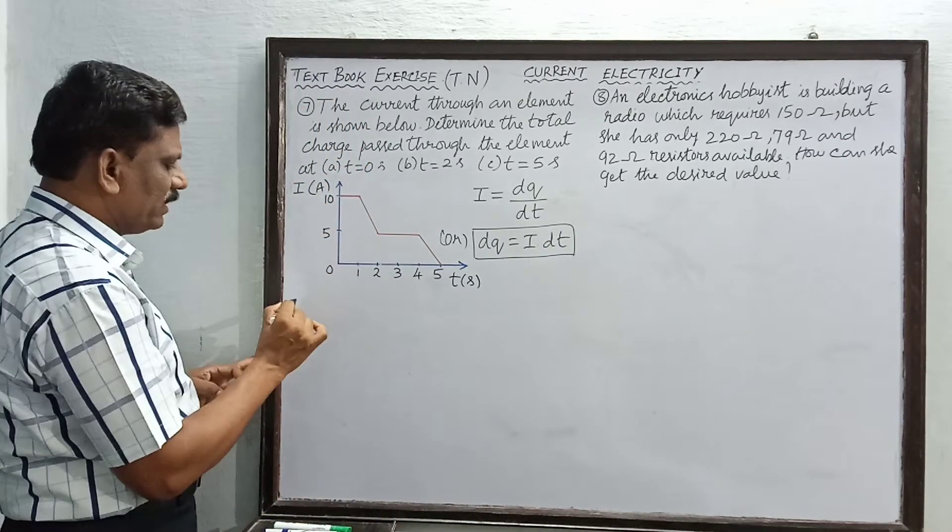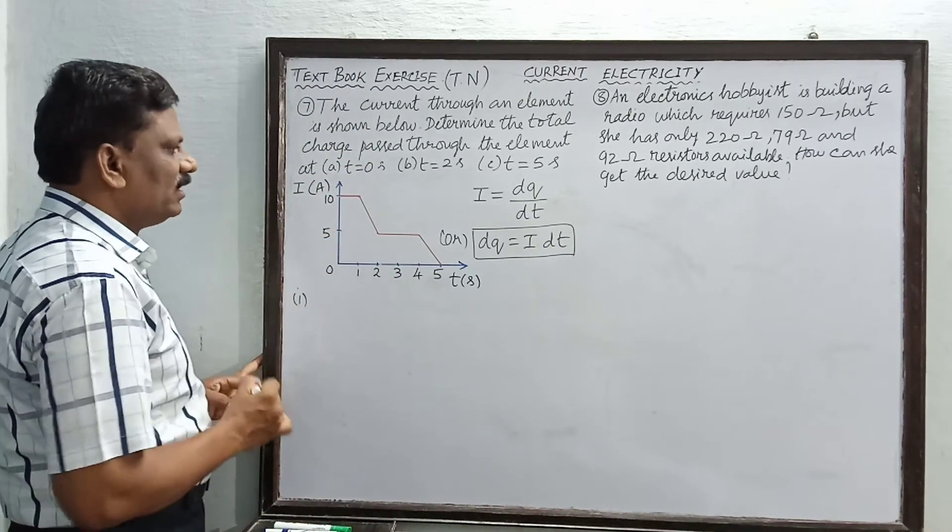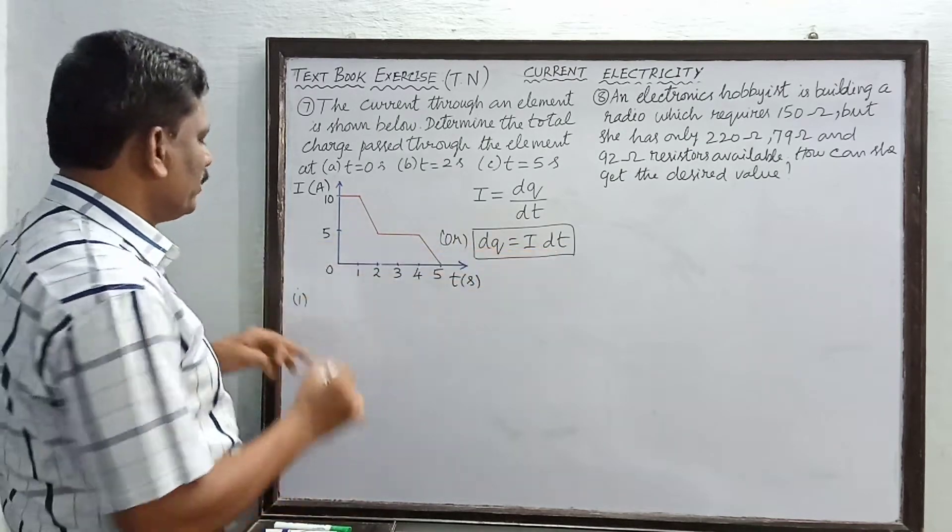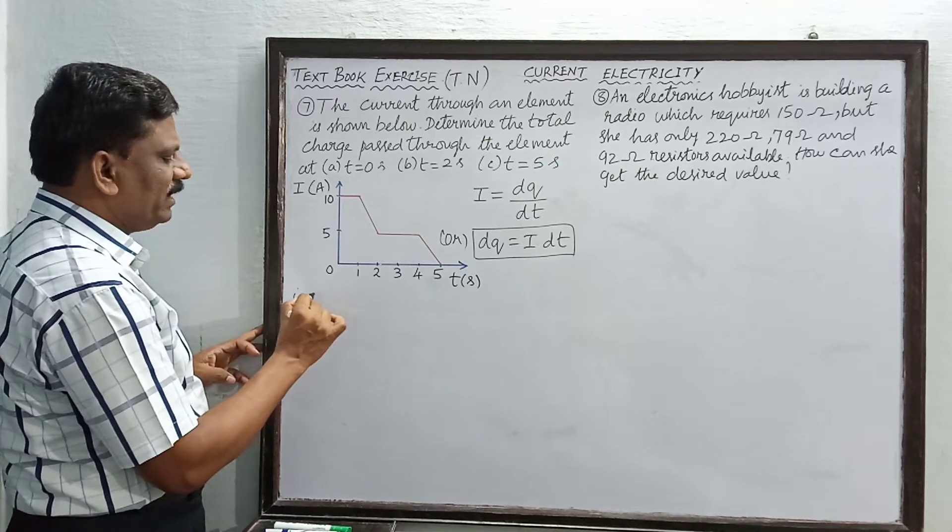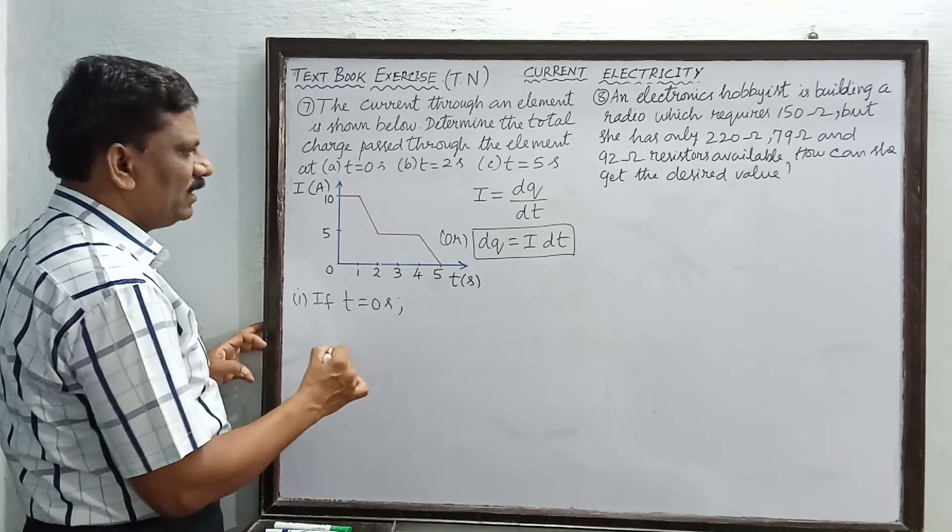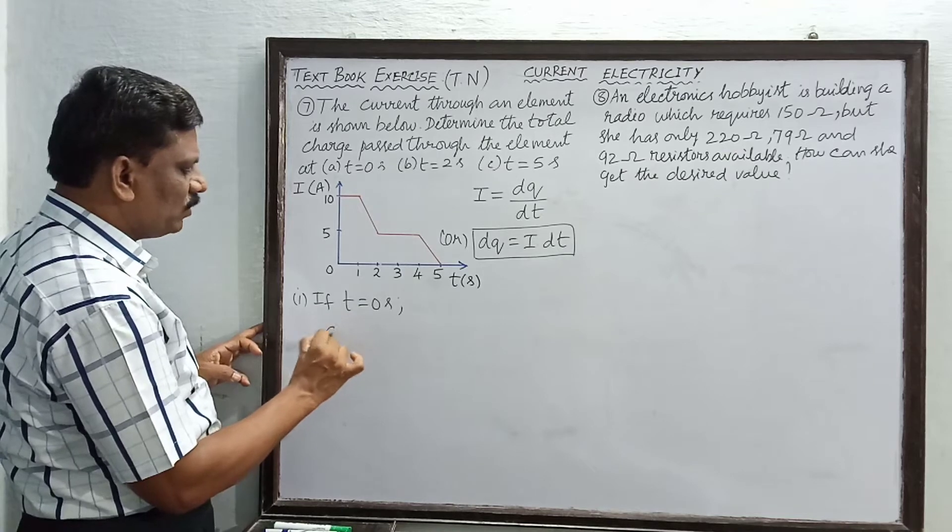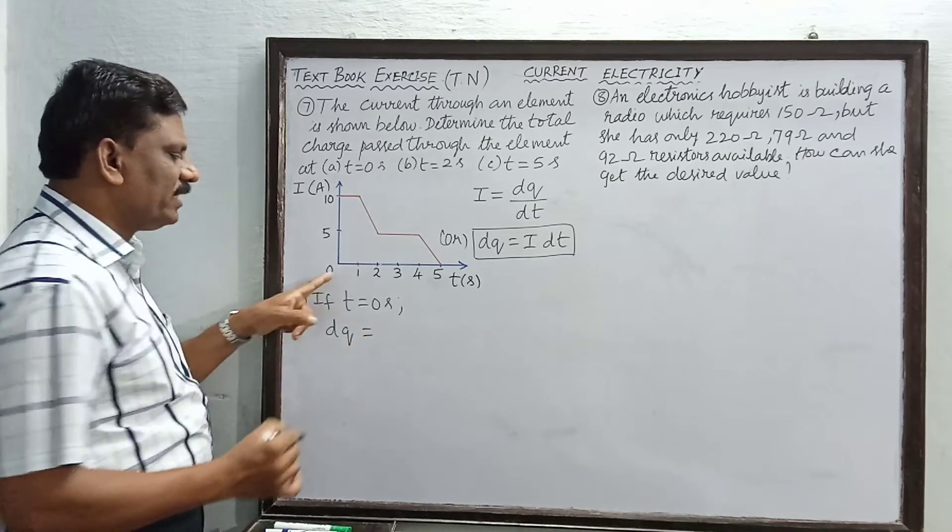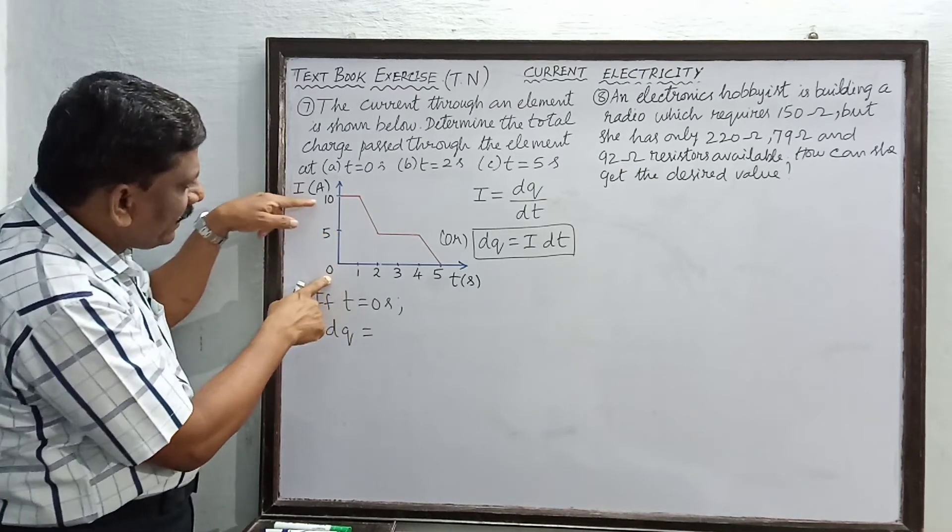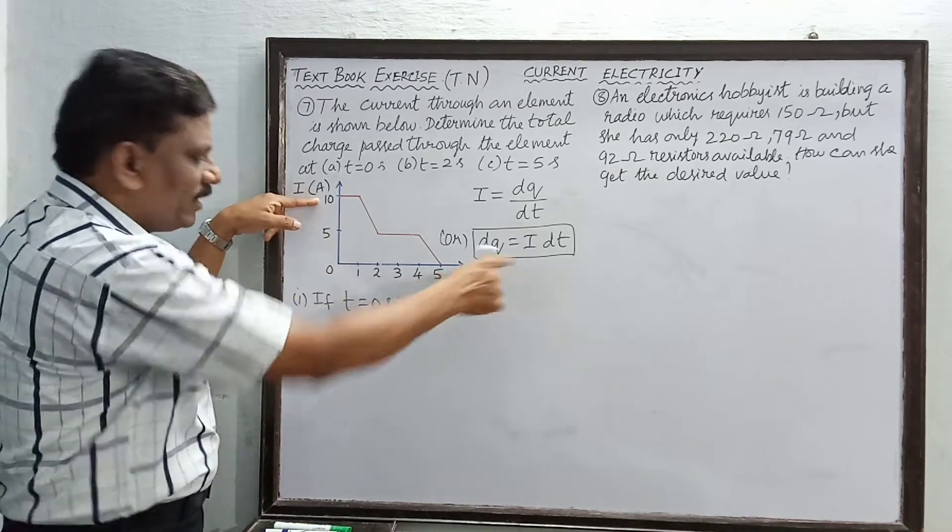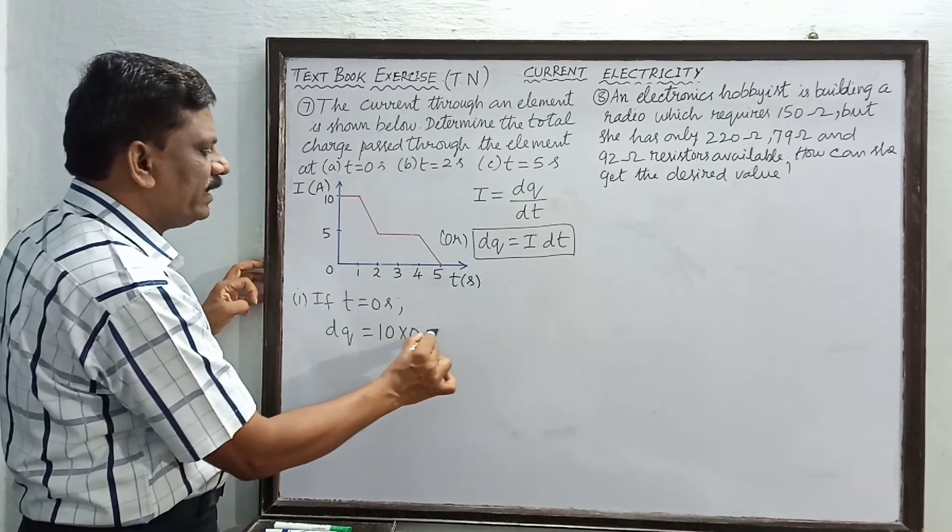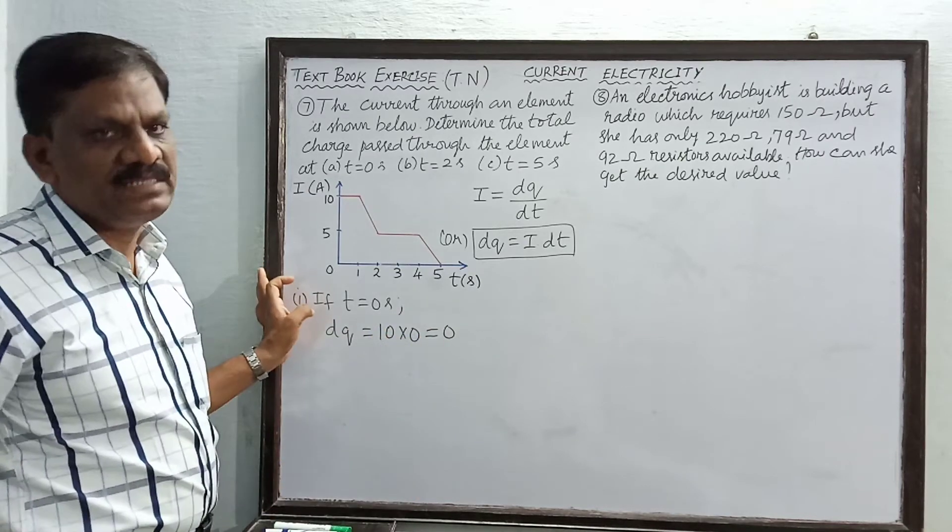Now you can take the first one. In the first case, i into dt, when time t equals 0. If t equals 0 seconds, then dq is equal to, at 0 seconds you find out the current, it is 10 amperes. At 0 seconds the current is 10 amperes, so i equals 10. So 10 into time is 0, 10 into 0 equals 0.